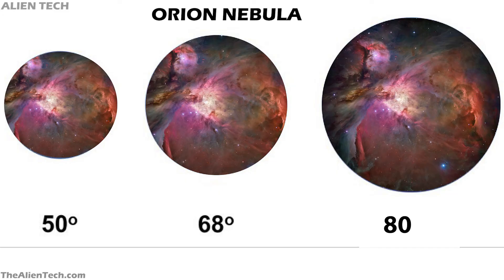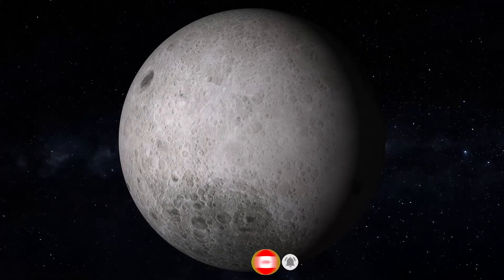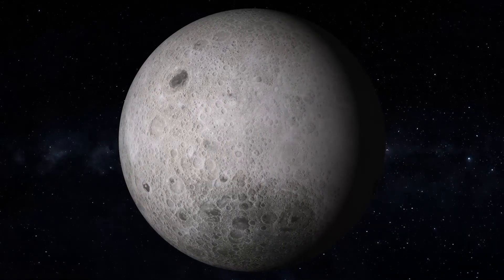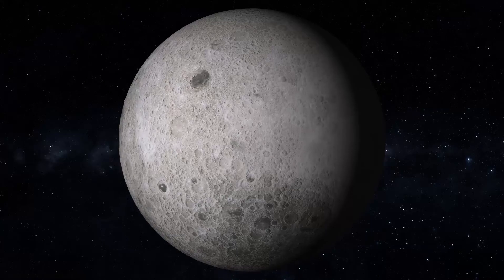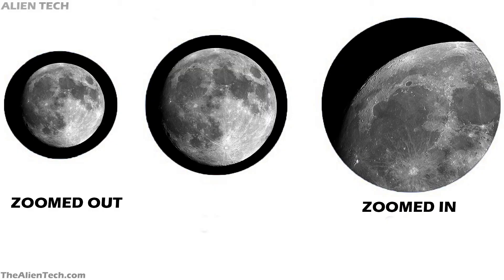The second factor is field of view — how much area of the sky you can see through a telescope, measured in degrees. When you have a large focal length, the field of view of your telescope is small. A smaller field of view is useful for looking at nearby objects such as planets or moons, because you can zoom in to see their details.